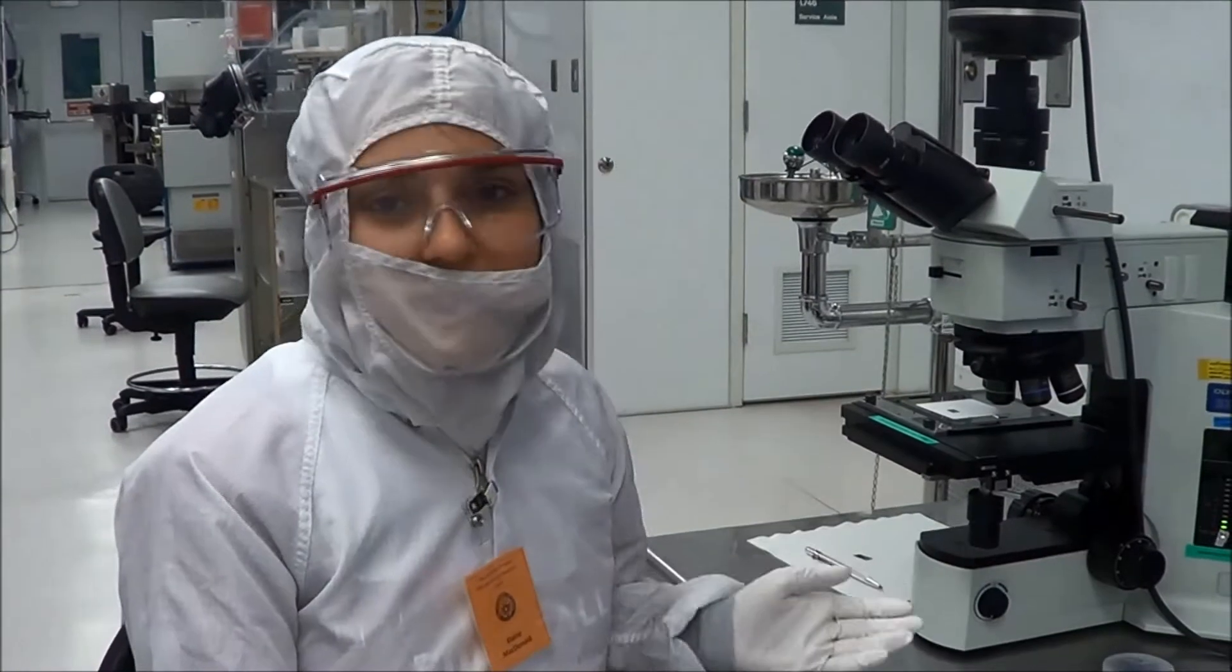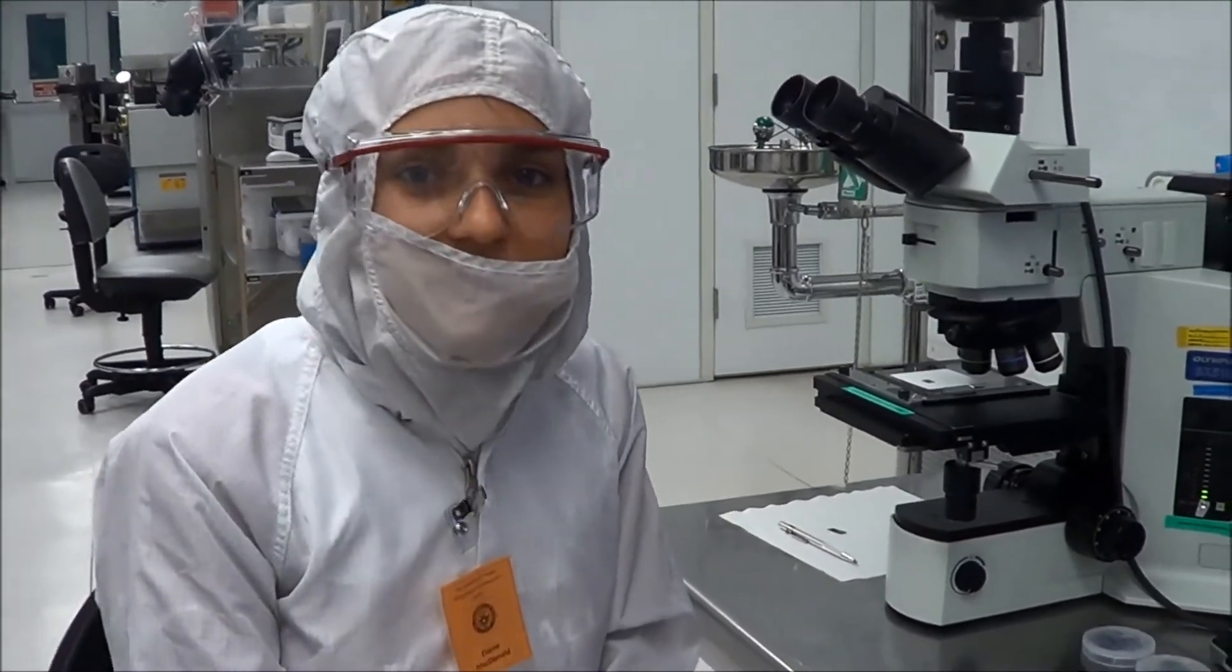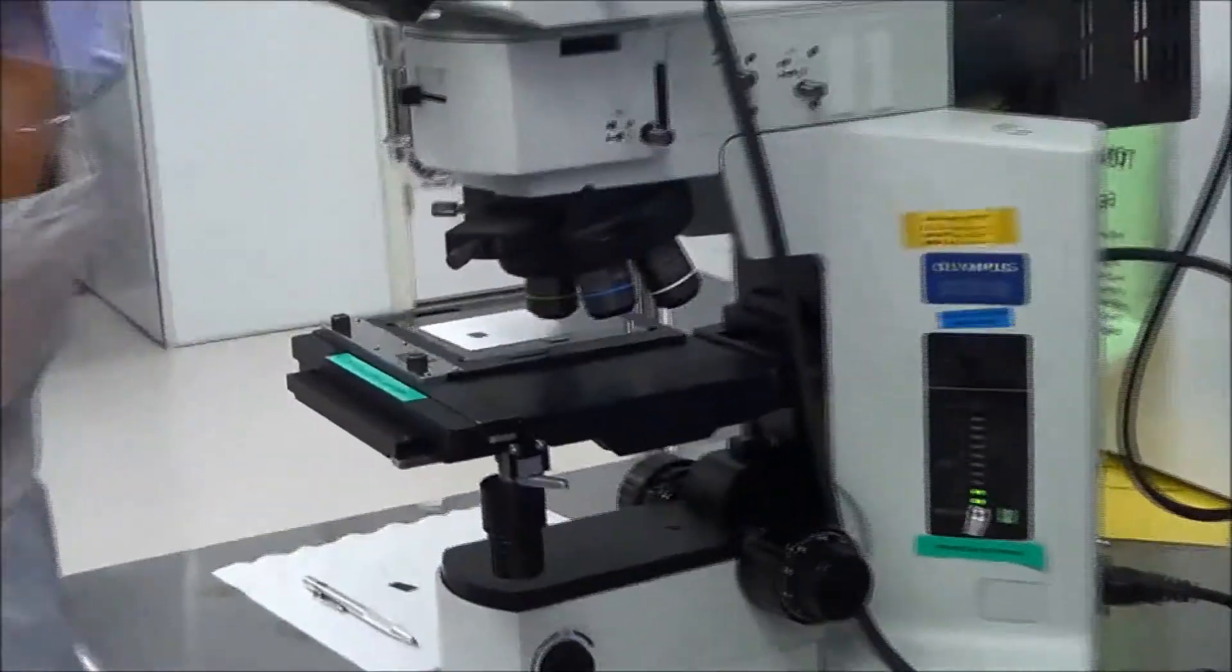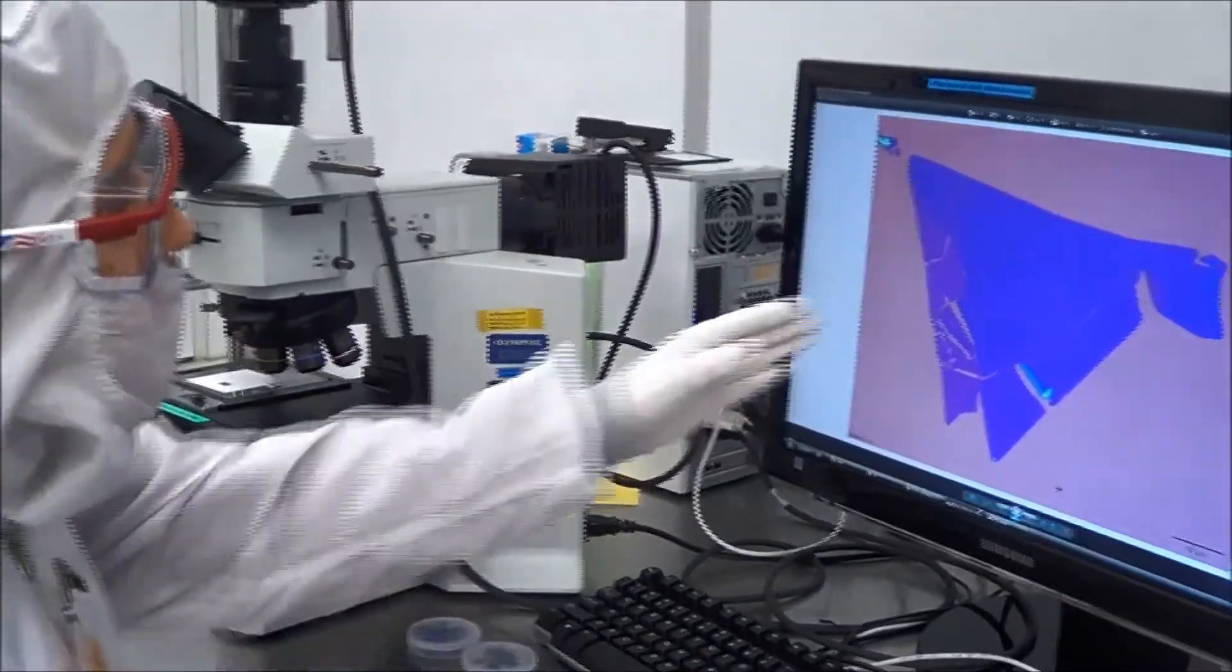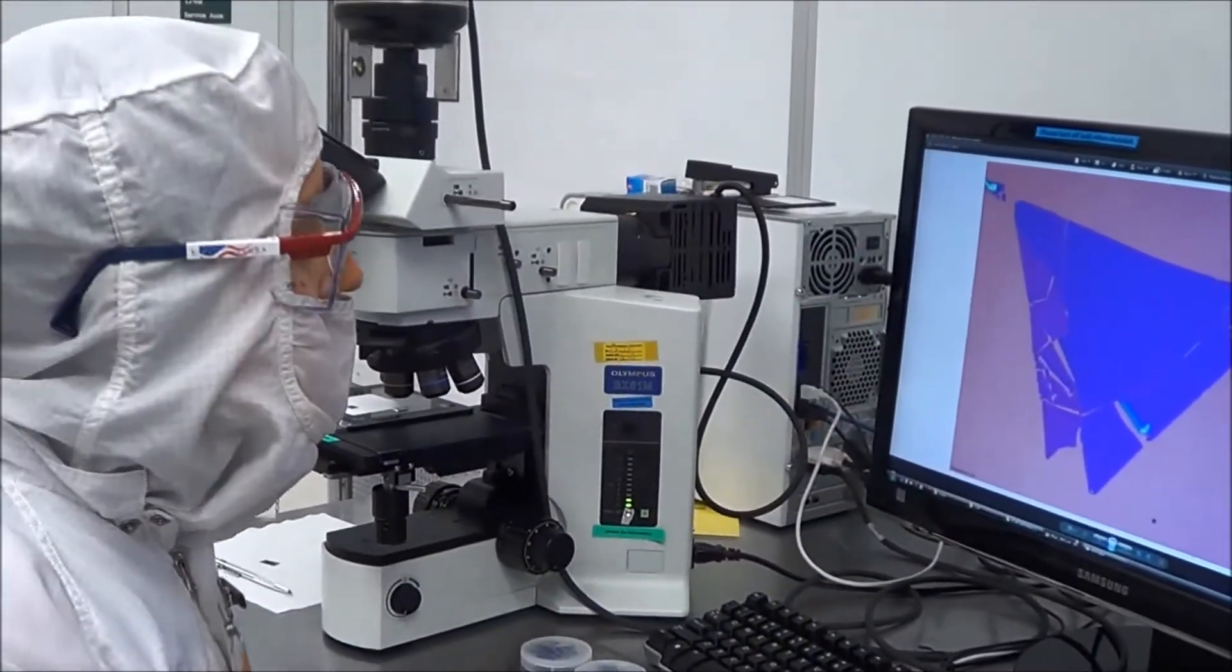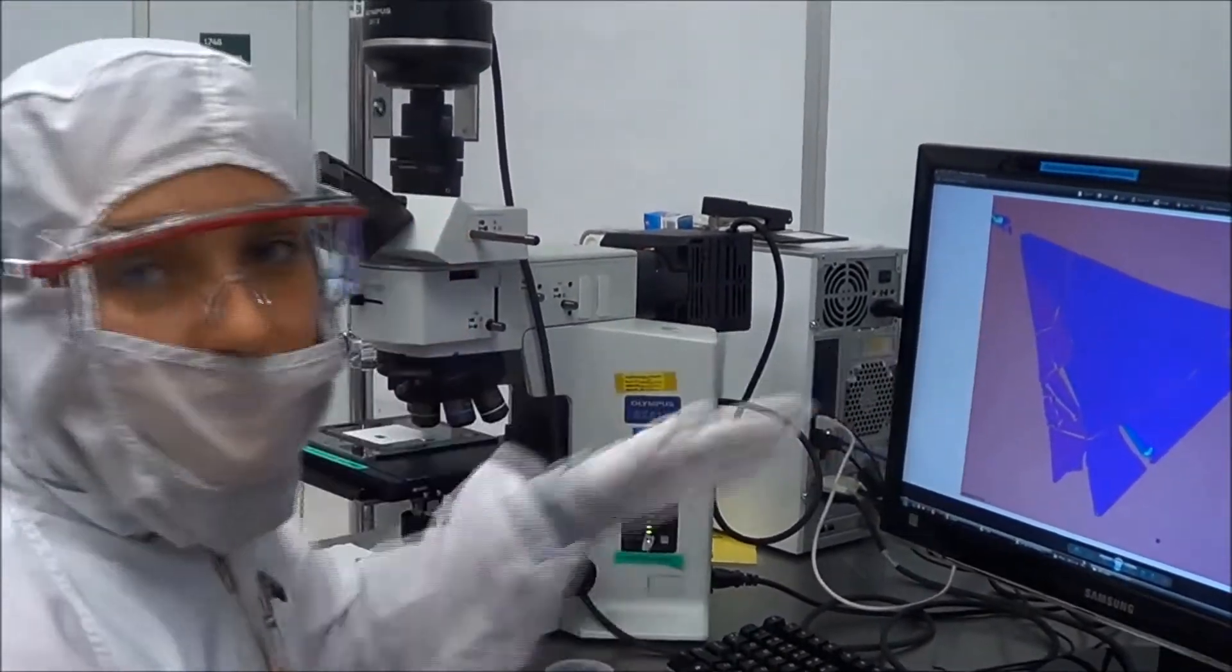Next, upload your exfoliated sample underneath the optical microscope. This is the next step in determining whether you achieve monolayer. We use this in order to observe the brightness and contrast. The brighter the flake, the thicker the flake. Here, monolayer appears to almost be a shadow.